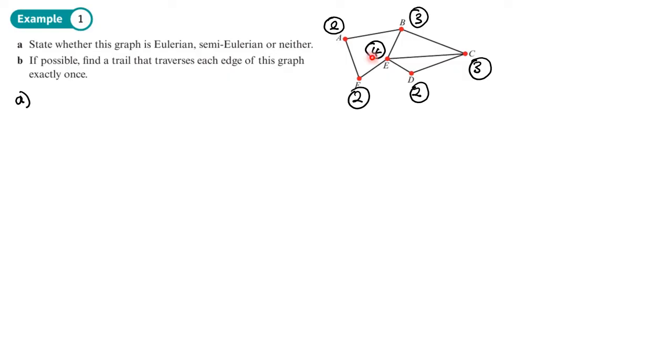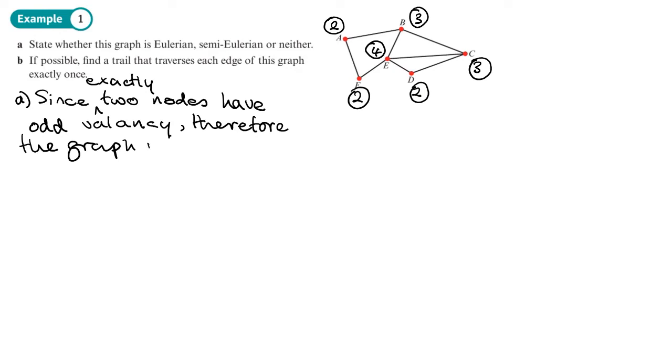So can you see here that I've got two of these vertices here have odd order, so it's going to be semi-Eulerian. So just write down, since two vertices or nodes have odd, or exactly two nodes have odd, we could use order or valency. I'll use the word valency, therefore, the graph is semi-Eulerian.